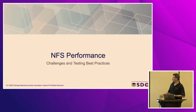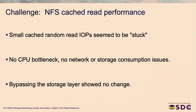On the NFS side, we were performing a cached random read workload — trying to take storage out of the equation and see what the software could do in terms of requests per second. We got to a point where IOPS were stuck with no obvious bottleneck — no CPU, memory, or network saturation. We even tried bypassing the storage layer completely in the code, just returning to the client immediately on a read, and we were still stuck at roughly 60% of what I expected we should be able to do.